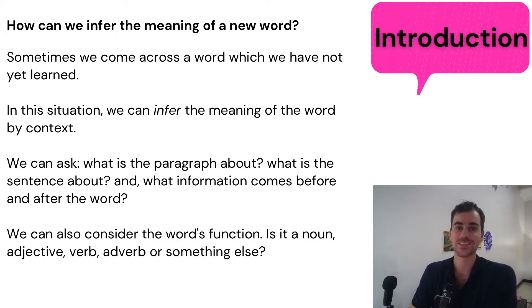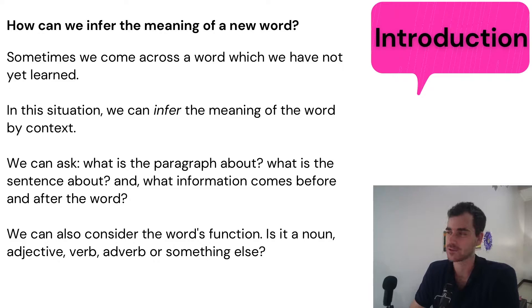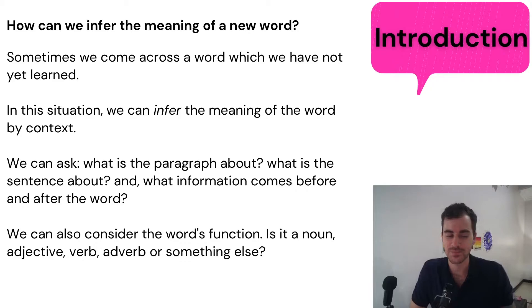How can we infer the meaning of a new word? Sometimes we come across a word which we have not yet learned. In this situation, we can infer the meaning by context. We can ask: what is the paragraph about? What is the sentence about? And what information comes before and after the word? We can also consider the word's function — is it a noun, adjective, verb, adverb, or something else? If it's an adverb, for example, then we know it's answering the question 'how?' — an adverb describes an action. So the function of speech is also important when inferring meaning.